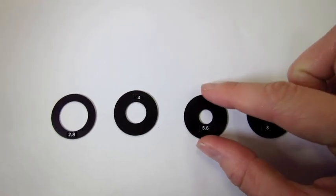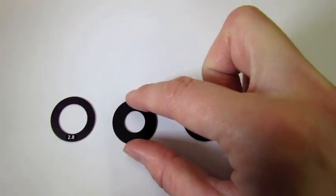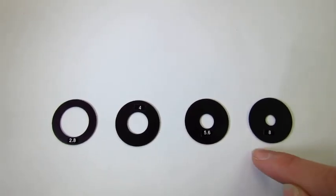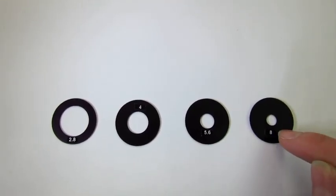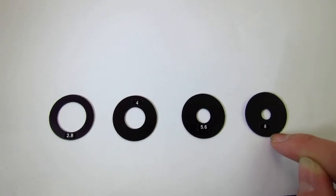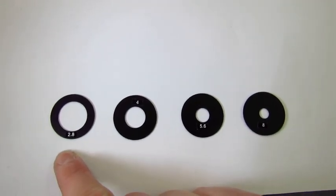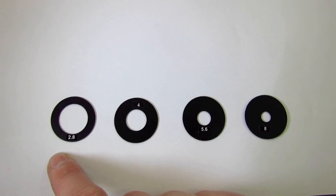So you can see that the higher the number, the smaller the hole that lets the light through. So if you imagine 8 is a squint, if you compare it to your eyes, and 2.8 is a very wide eye, so there's a lot of light getting in.